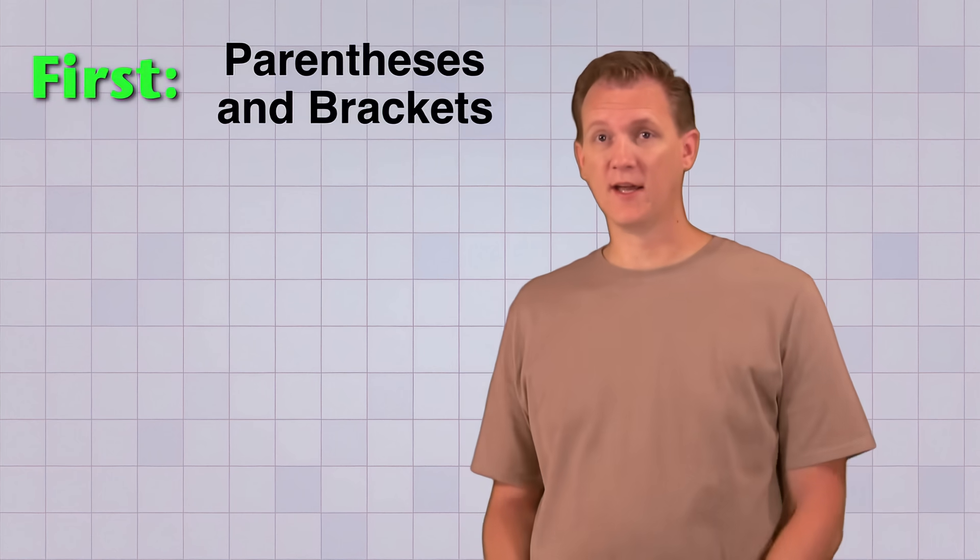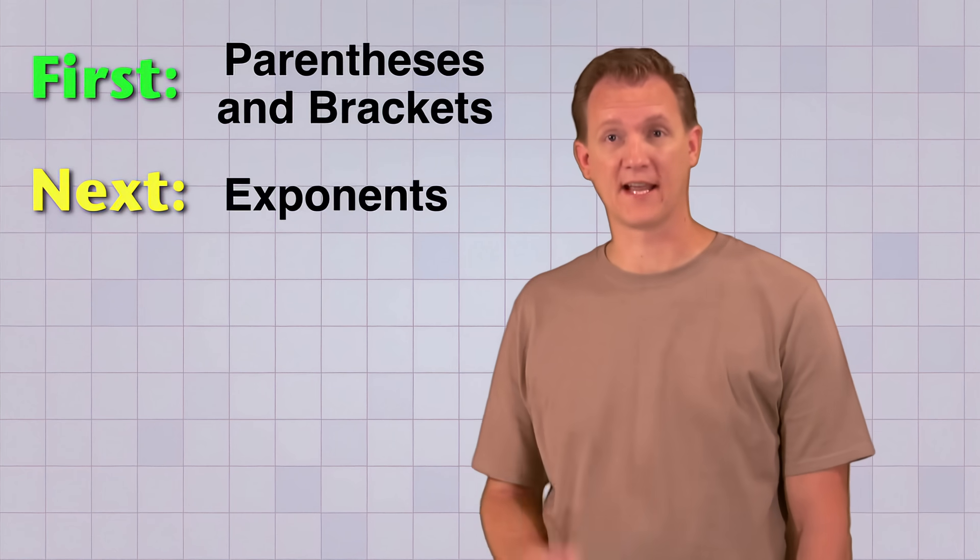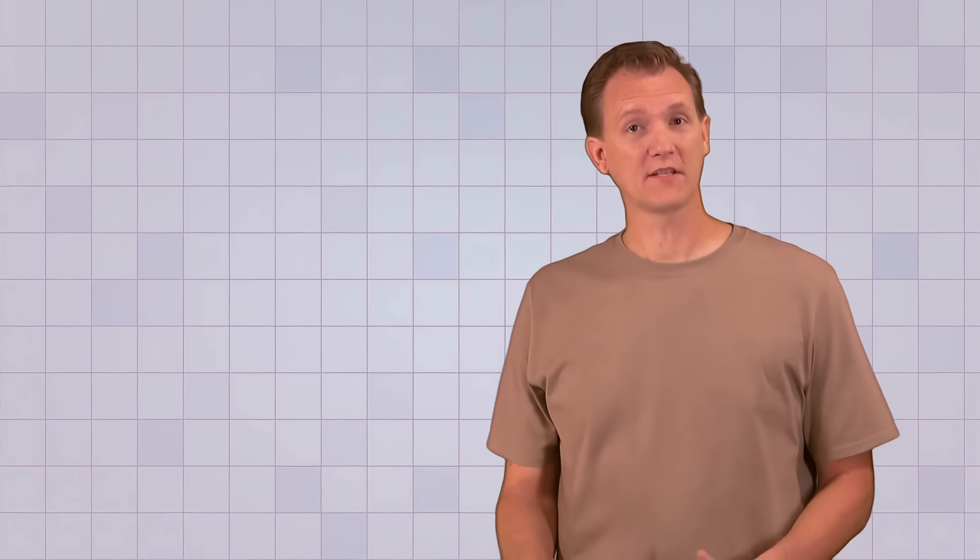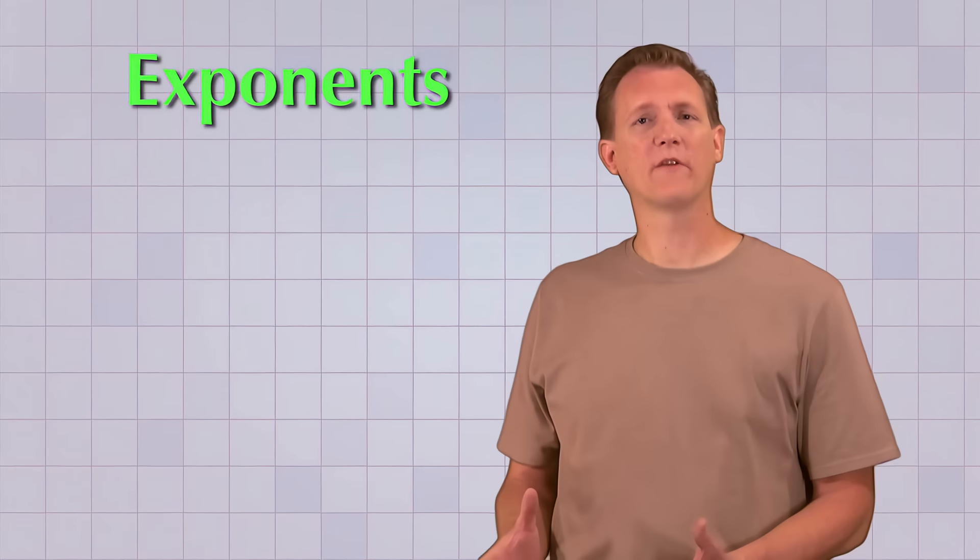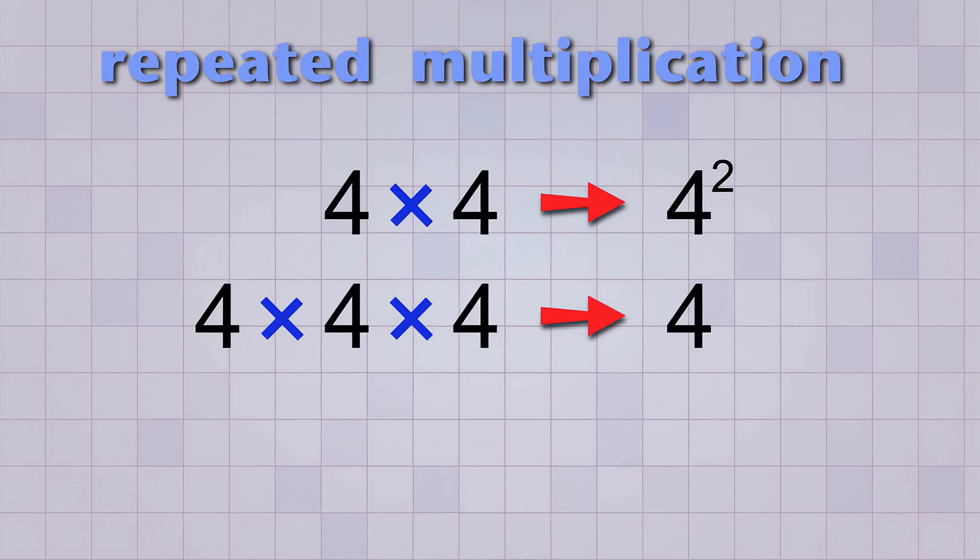Okay, now that we know that we always do operations in parentheses or brackets first, let's take a closer look at the second rule that says the next thing we do is exponents. Now if you haven't seen exponents before, they're just a way of writing repeated multiplication. For example, the repeated multiplication 4 times 4 can be written in a shorter form as 4 multiplied twice. And 4 times 4 times 4 can be written as 4 multiplied 3 times. And 4 times 4 times 4 times 4 can be written as 4 multiplied 4 times. Get the idea?